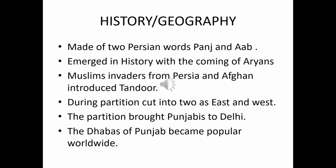Now history and geography. The word Punjab is made up of two Persian words — Panj means five and Ab means water — as the five rivers Jhelam, Chenab, Ravi, Beas, and Sutlej flow through this region. Punjab emerges into history with the coming of the Aryans into India. Then came the Muslim invaders from Persia and Afghanistan, and during this period Punjabi cuisine was also influenced. The tandoor came into use in Punjabi cuisine during this time.